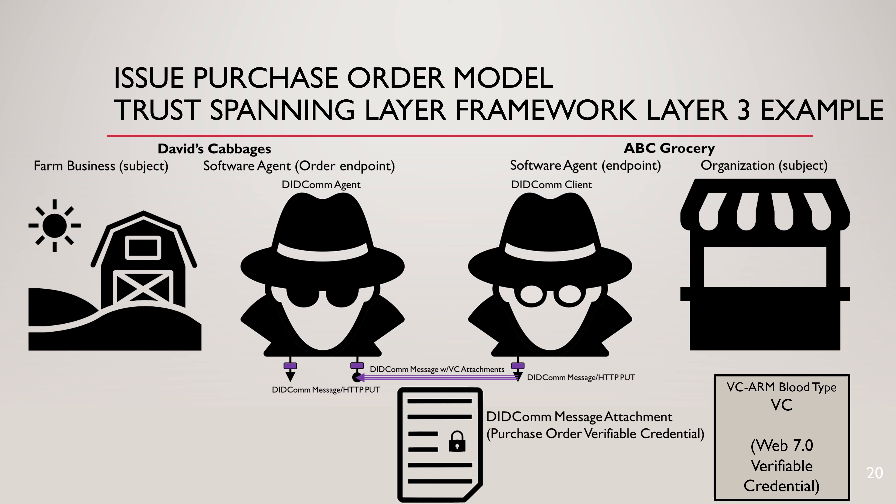For completeness, let's look at a couple of other sender-receiver patterns. In the issue purchase order model, ABC Grocery wants to issue a purchase order to David's Cabbages for 10 cabbages. They do this by issuing a purchase order encoded as a verifiable credential, stamped with VC ARM blood type VC. ABC Grocery resolves the DID of David's Cabbages, extracts its service endpoint from the DID document, and sends the purchase order verifiable credential to David's Cabbages software agent.